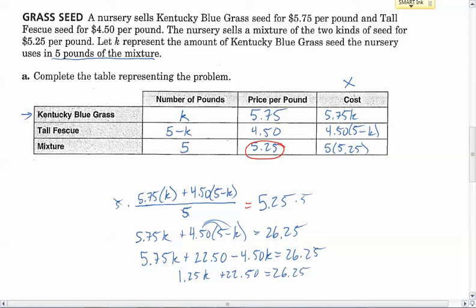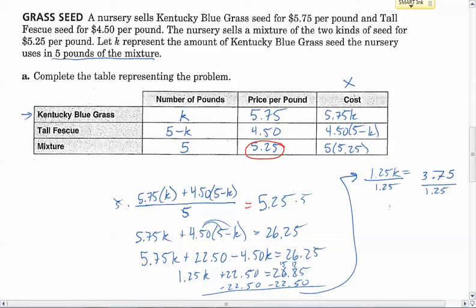Now I can subtract 22.50 from both sides. I'm running out of room here, so I'm going to go up here. 1.25K equals 3.75. And so now I'm going to divide both sides by 1.25, which will give me K equals 3.